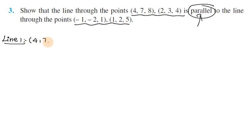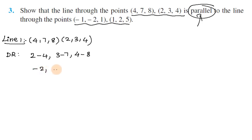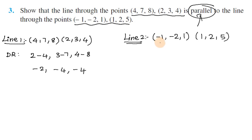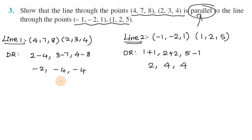Direction ratio of Line 1: from (4, 7, 8) to (2, 3, 4). x2 minus x1 = 2 minus 4 = minus 2, 3 minus 7 = minus 4, 4 minus 8 = minus 4. So Line 1 direction ratio is (-2, -4, -4). Direction ratio of Line 2: from (-1, -2, 1) to (1, 2, 5). 1 minus (-1) = 2, 2 minus (-2) = 4, 5 minus 1 = 4. So Line 2 direction ratio is (2, 4, 4).